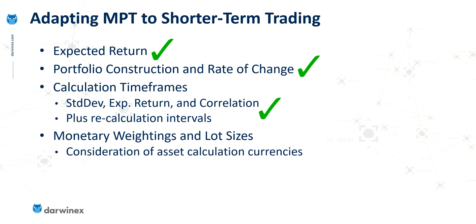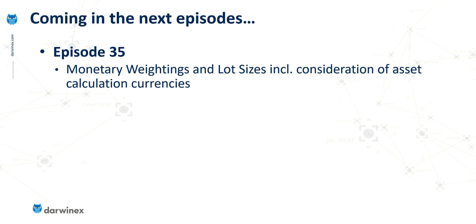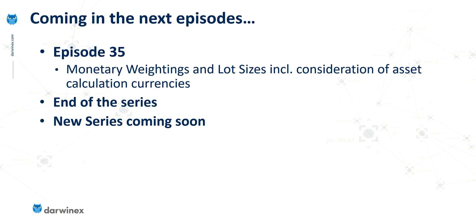We've now covered three of our adaptations that are required. In the next episode, episode 35, I'll cover the last of these: how we deal with monetary weightings compared to lot sizes. I'm also going to look at the fact that different assets for different traders will use different calculation currencies, and because of this there are certain conversions that need to take place. But after this episode, this will be the end of this series on institutional grade risk management techniques. I'll be moving on with a new series covering the process I take when evaluating different technical indicators to identify if they could potentially add value to my trading strategies.